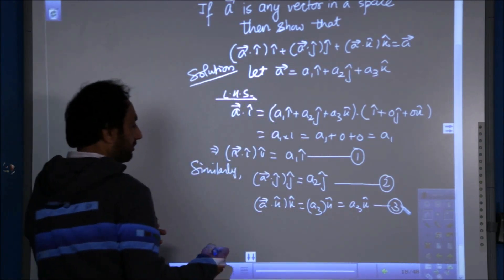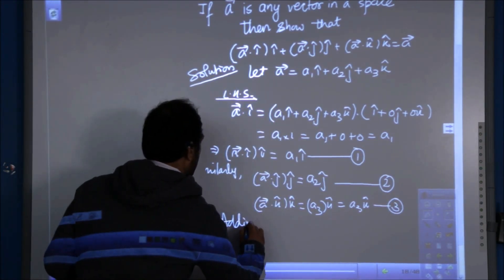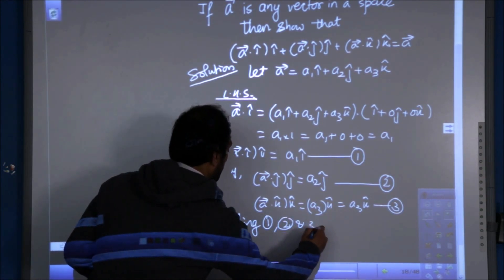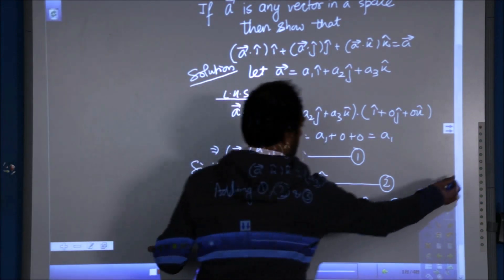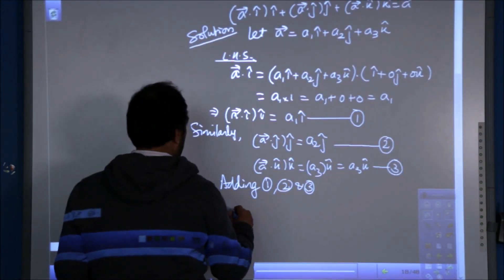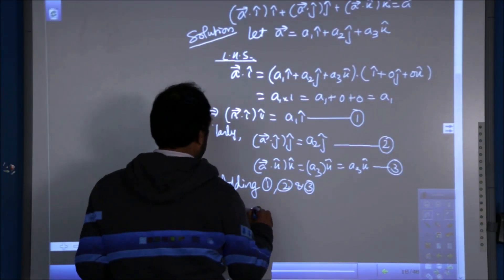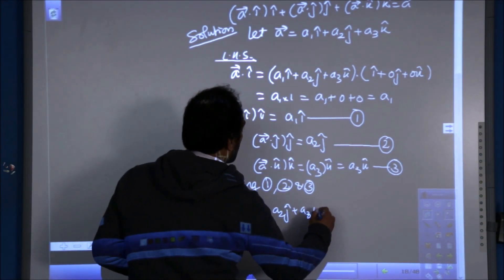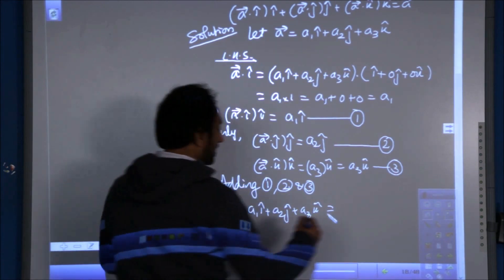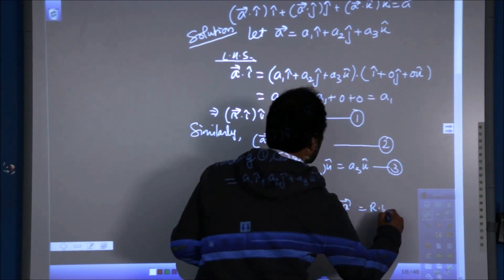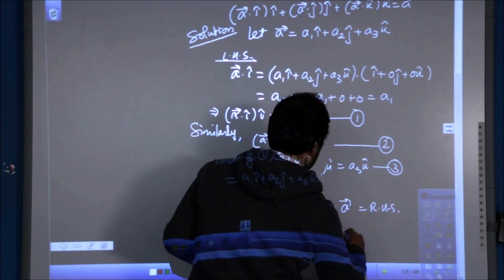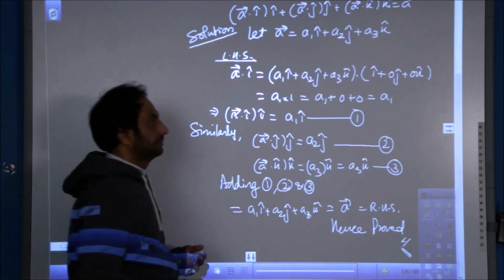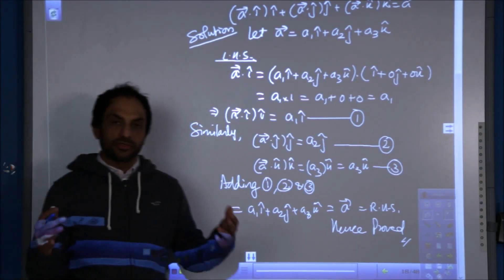Now add them. So adding 1, 2 and 3, you can get the idea that how simple the question is. We get a1i plus a2j plus a3k. And we have already taken this as a vector. And this is nothing but a right hand side. Hence, proved. This is a very simple question and it is important for boards also.